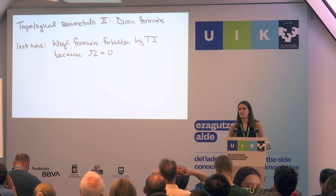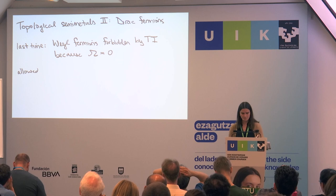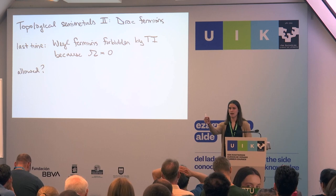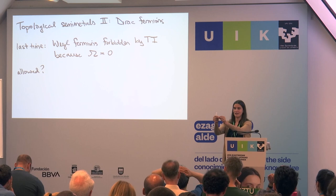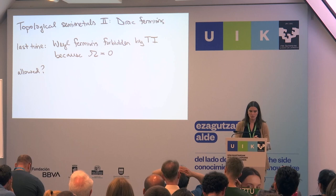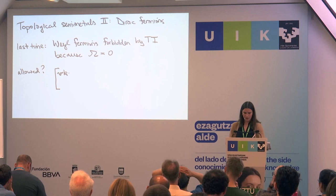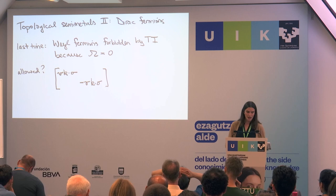If you have time reversal and inversion symmetry, then what is allowed? Remember what we talked about last time: if you have inversion symmetry, for every Weyl point at some K point, you have another Weyl point at the opposite K point which has the opposite chirality. If you have time reversal symmetry, you come back to your original K point and now you have two Weyl points with opposite chirality at the same K point. So if you have time reversal and inversion, what you can have is two Weyl points together — we'll write that as vk·σ minus vk·σ — and they have opposite chirality.